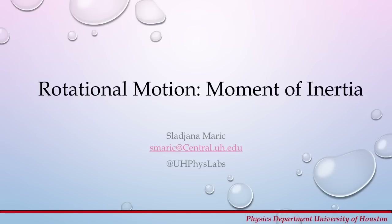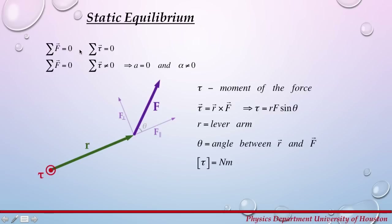This week we will do an experiment on rotational motion. The goal of this experiment is to determine the moment of inertia of different objects. For objects at static equilibrium, the sum of all forces and sum of all torques acting on the object are zero. This means that translational and angular acceleration are equal to zero.